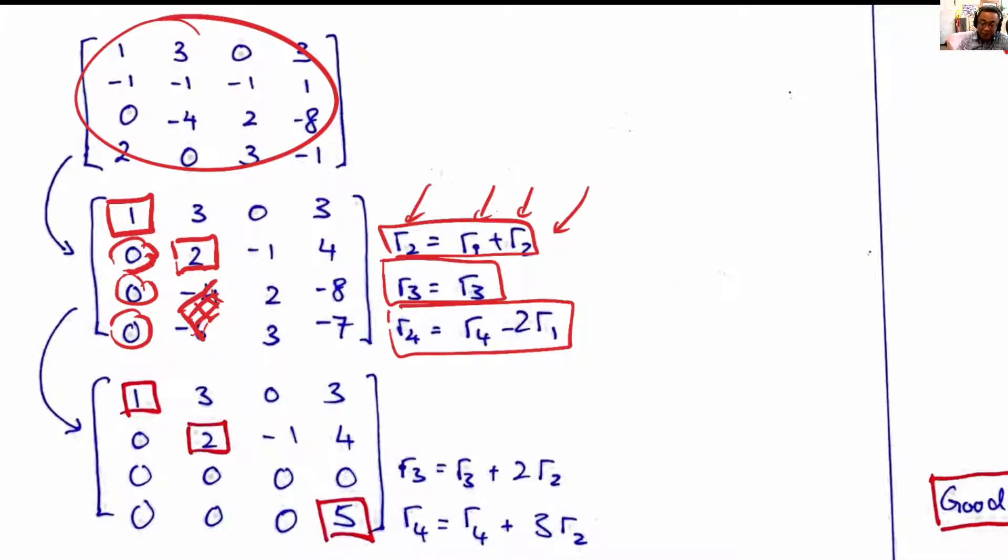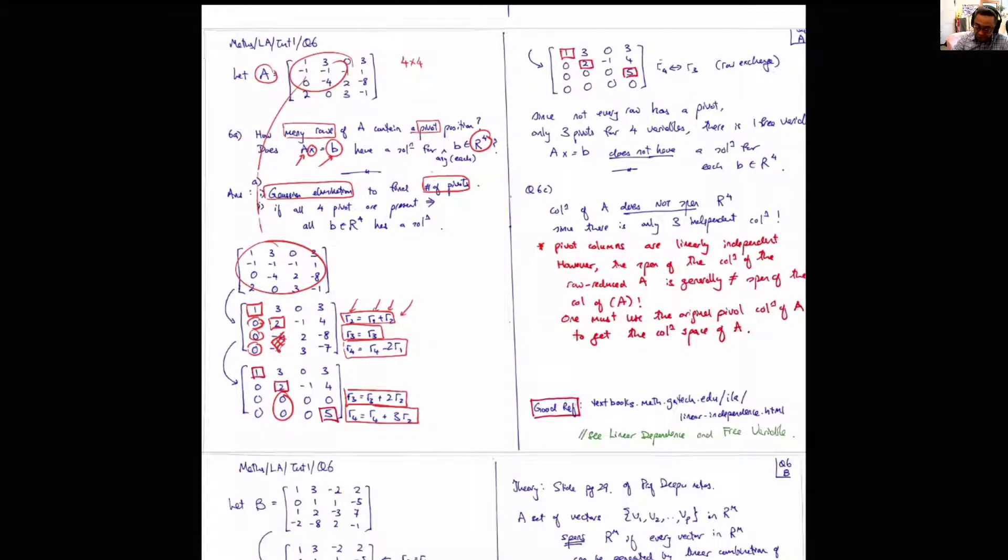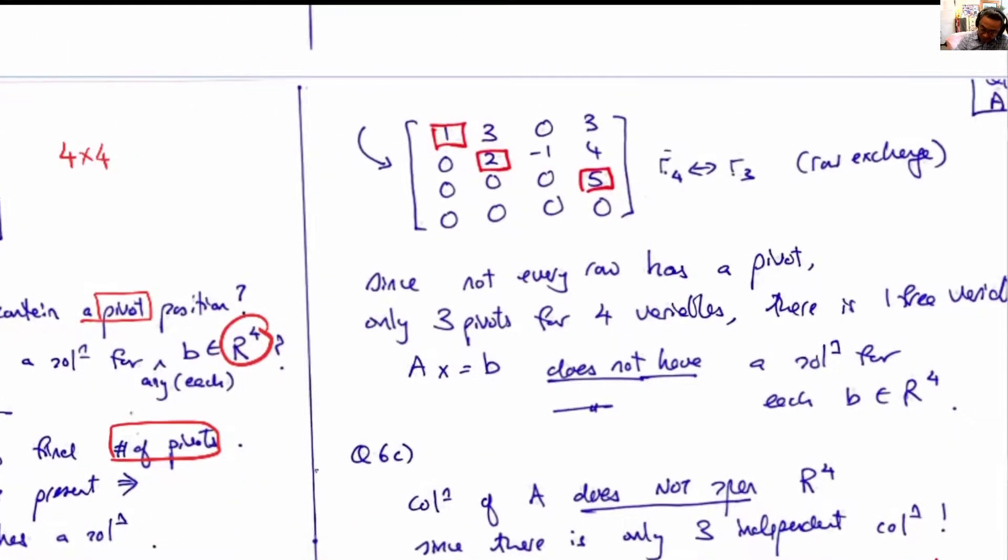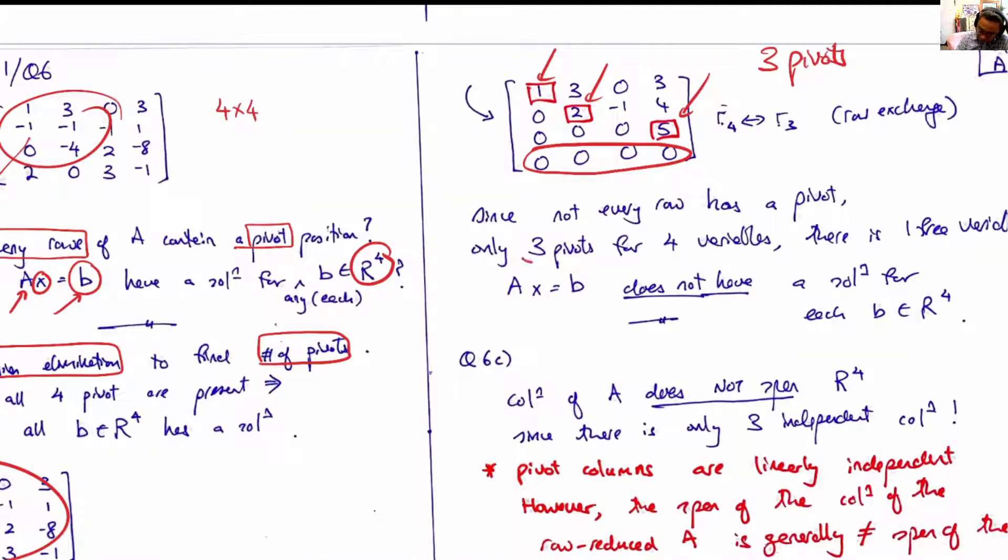We continue, and then we have found that we can find three pivots and one full row of zeros. The interpretation is this: we have found three pivots, but there are four variables.